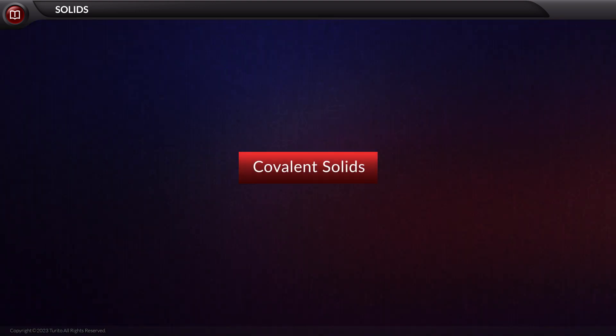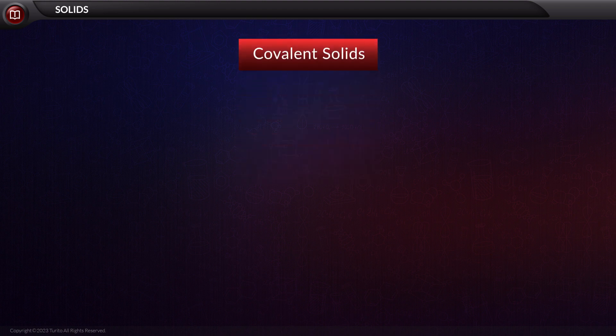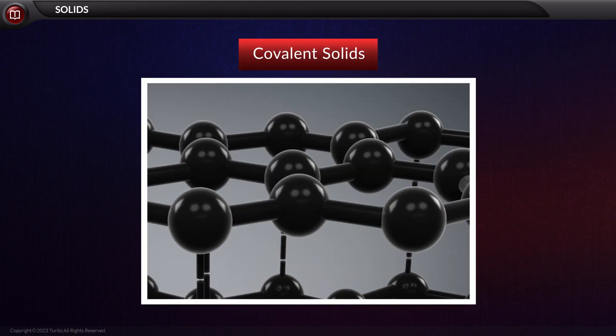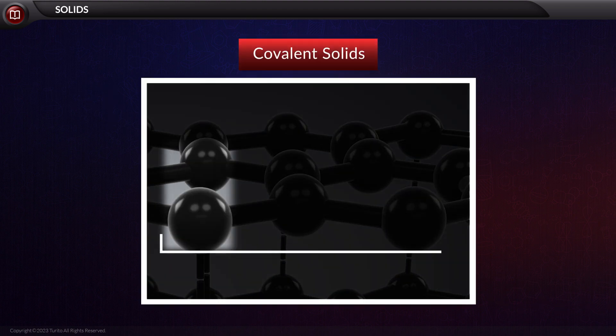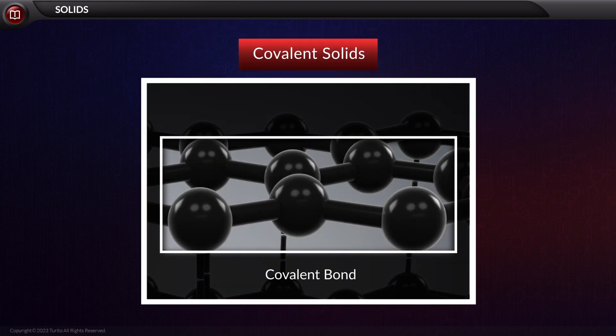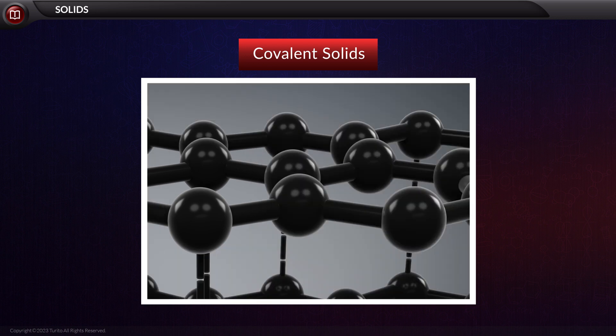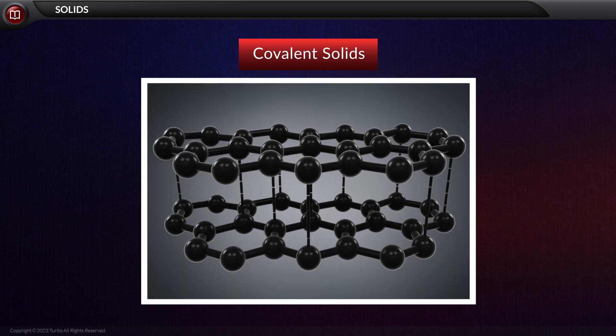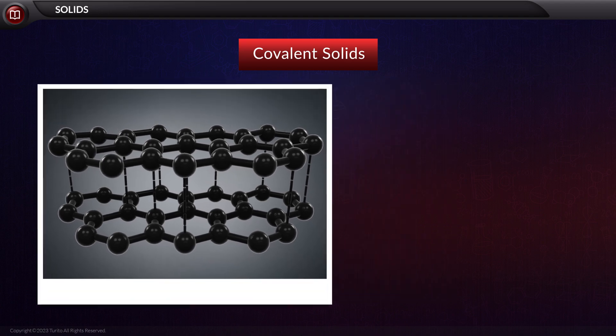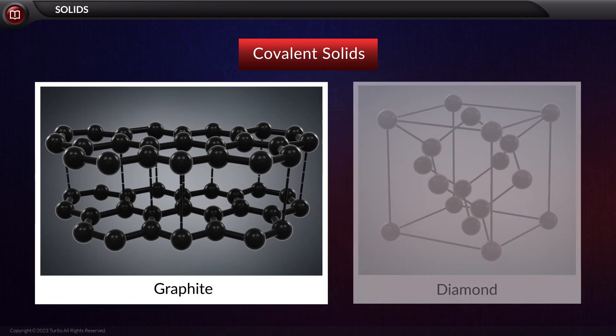After that are covalent solids. Covalent bonds hold the atoms together in these substances. A large molecule is formed because of a network of interconnected covalent connections across the crystal. Examples include graphite and diamond.